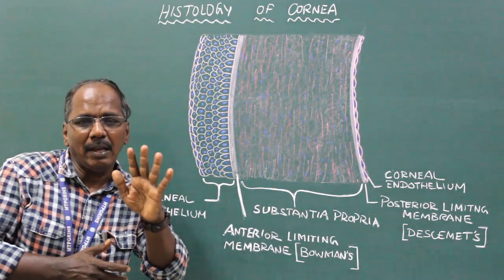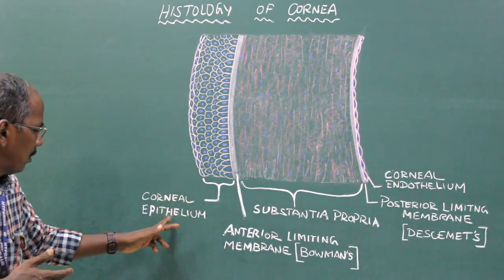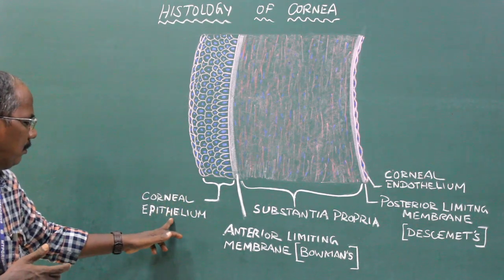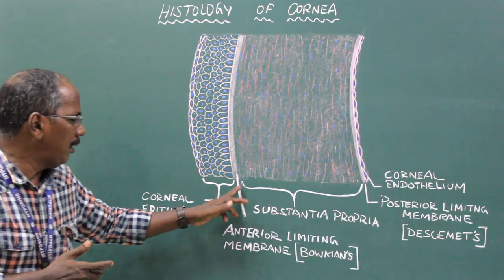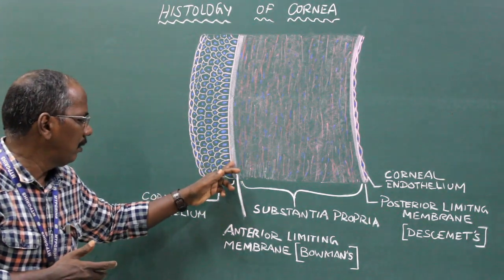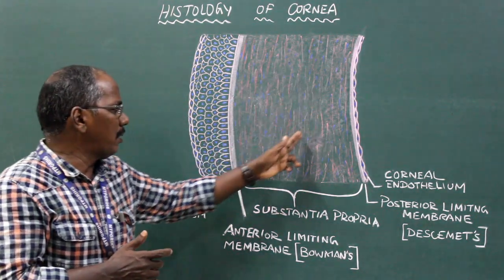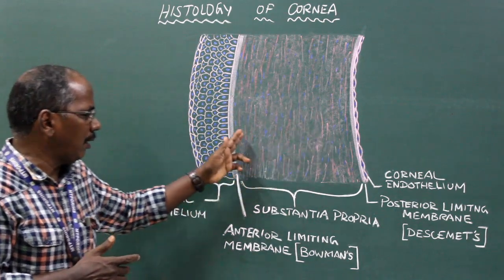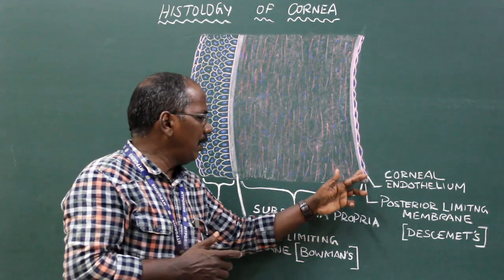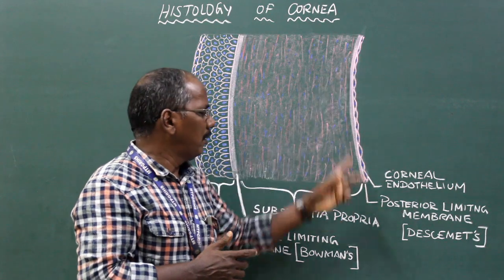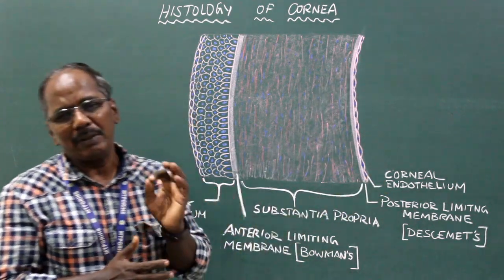So the five layers are namely: corneal epithelium, anterior limiting membrane, corneal stroma or substantia propria, posterior limiting membrane, and corneal endothelium.